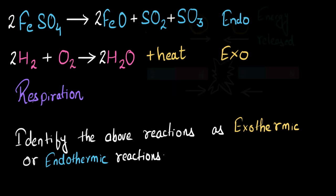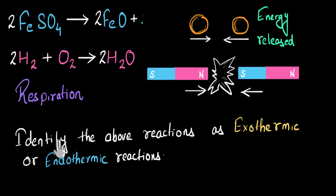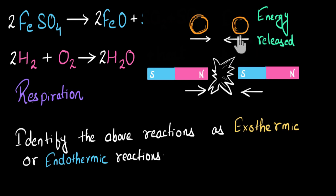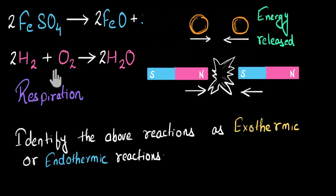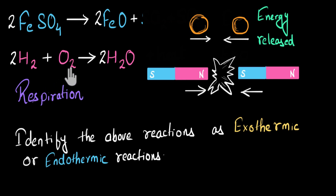For combination reactions being exothermic, I also use the magnet analogy. When two magnets that are attracting each other come close together, they release sound energy. Similarly, when two atoms that are attracting each other come close, they release energy. Hydrogen and oxygen are combining, and that's why they release energy — making this an exothermic reaction. Again, in reality many things are happening, so this is just a memory aid to help you remember that combination reactions in general are exothermic.